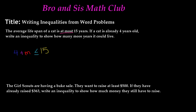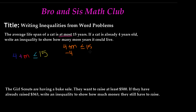So four plus m is less than or equal to 15 — that is our inequality. If we go ahead and solve it, we subtract four from both sides to get the variable by itself, leaving us with m is less than or equal to 11. That means m can be 11 or less than that. So the cat can live at most 11 more years or below. That was our first word problem.